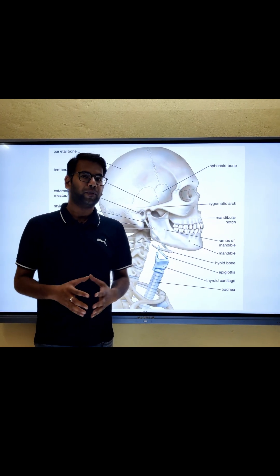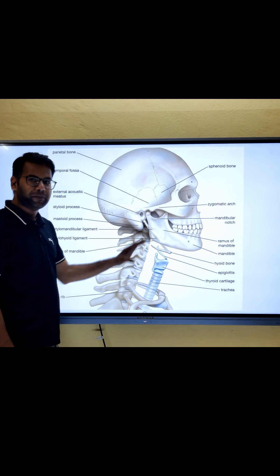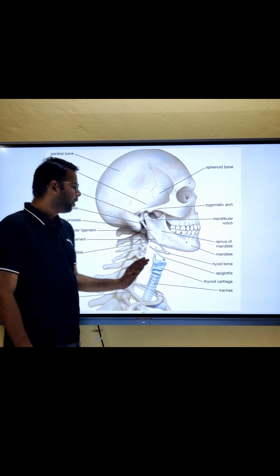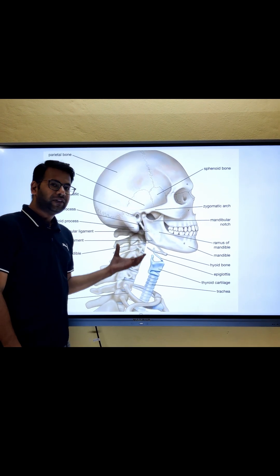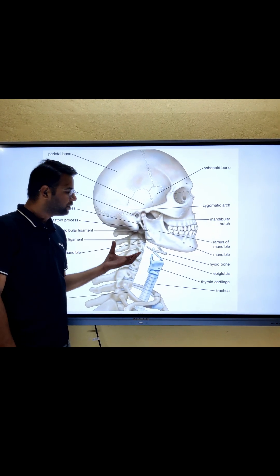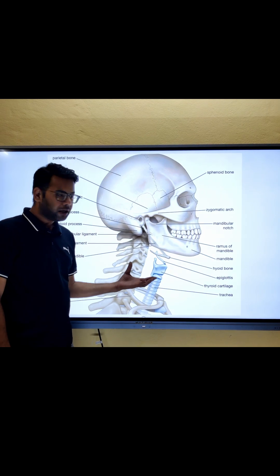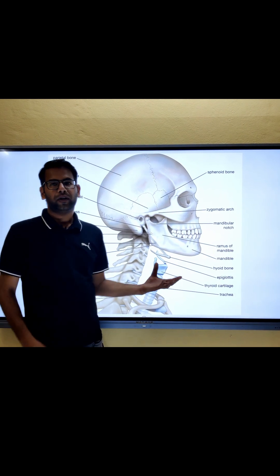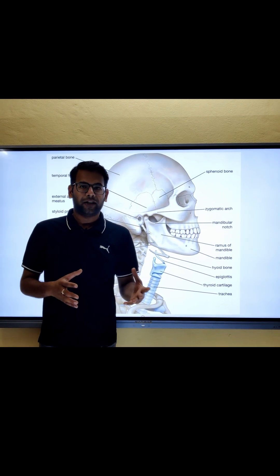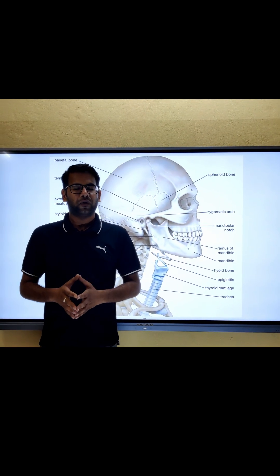Option two: hyoid bone. As you can see in this picture, the hyoid bone is located in front of the neck. It supports the tongue and related muscles, but again it is not found inside a tendon. So this option is also not correct.